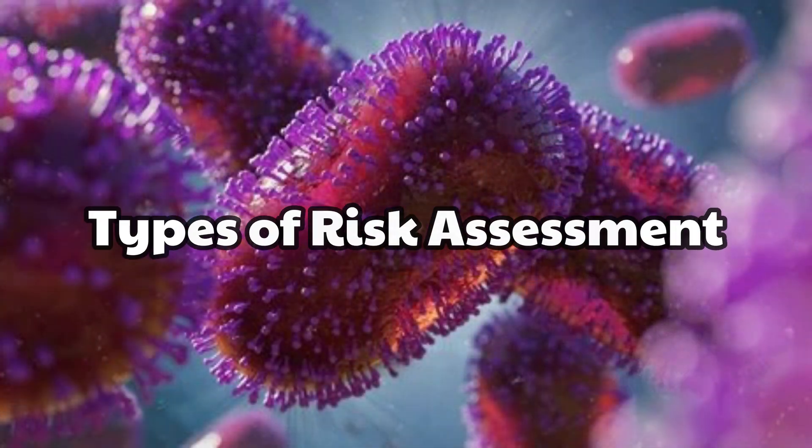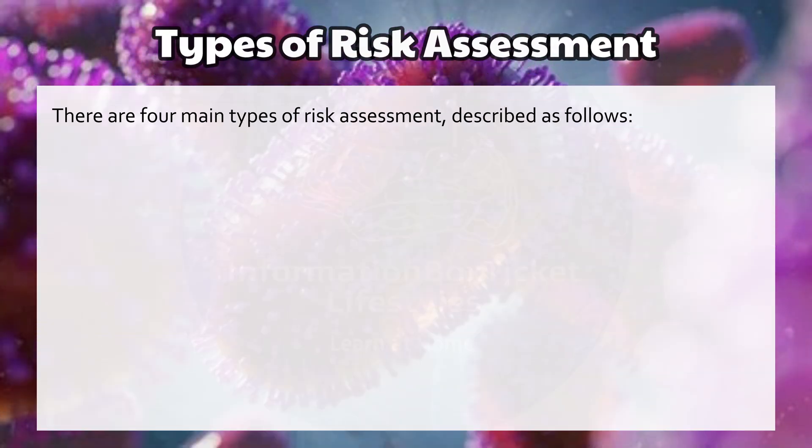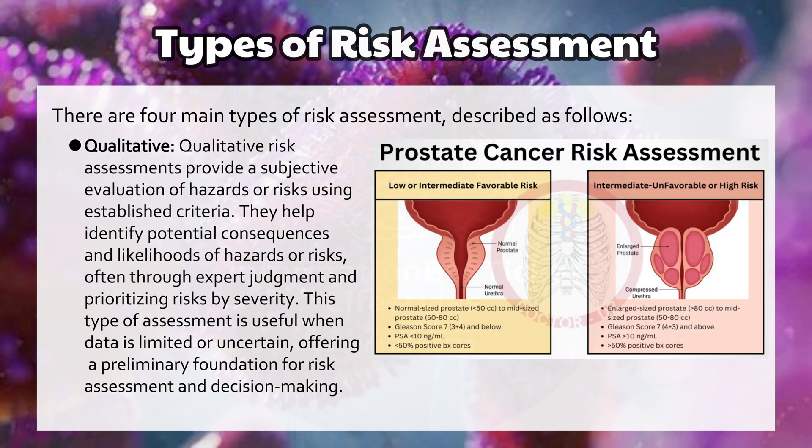Types of risk assessment. There are four main types of risk assessment. Qualitative: qualitative risk assessments provide a subjective evaluation of hazards or risks using established criteria. They help identify potential consequences and likelihoods of hazards or risks, often through expert judgment and prioritizing risks by severity. This type of assessment is useful when data is limited or uncertain, offering a preliminary foundation for risk assessment and decision-making.